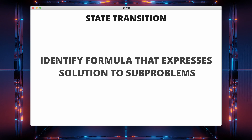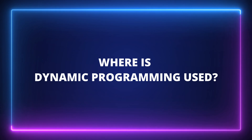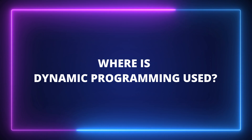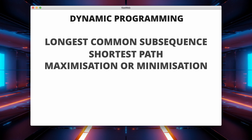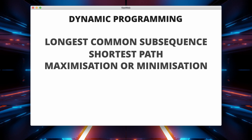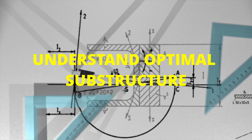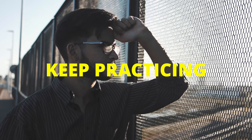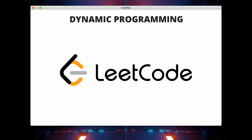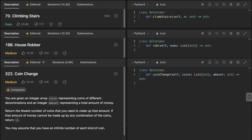Lastly, we have state transition: identify the recurrence relation or formula that expresses the solution to a sub-problem in terms of solutions to smaller sub-problems. Dynamic programming is widely used in solving optimization problems such as finding the longest common subsequence, the shortest path, or maximizing or minimizing some value subject to certain constraints. On LeetCode, DP problems often involve optimizing a solution based on a specific criterion. When approaching a DP problem, it's essential to understand the optimal sub-structure and overlapping sub-problems, and carefully design the state transition and data structures. Dynamic programming might be a bit overwhelming at the beginning, but practice will make it easier. Some LeetCode questions covering dynamic programming are: Climbing Stairs, House Robber, and Coin Change.